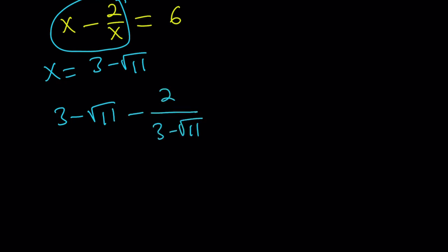Pretend you don't know the answer. Now we're going to go ahead and simplify this. And just by making a common denominator again, square the 3 minus root 11 to make a common denominator minus 2, divide by 3 minus root 11.